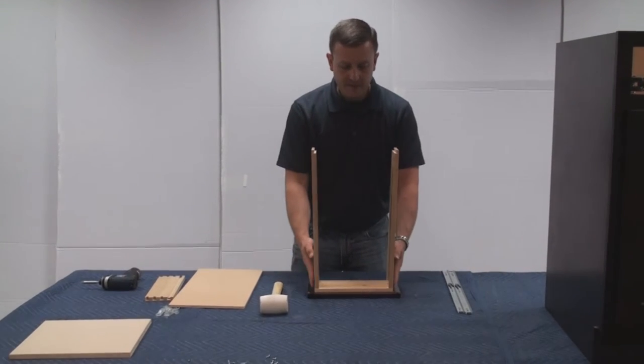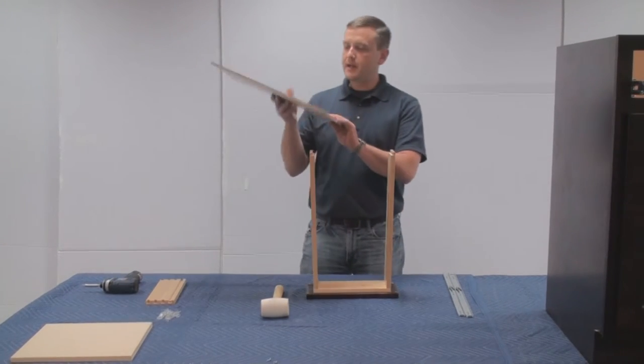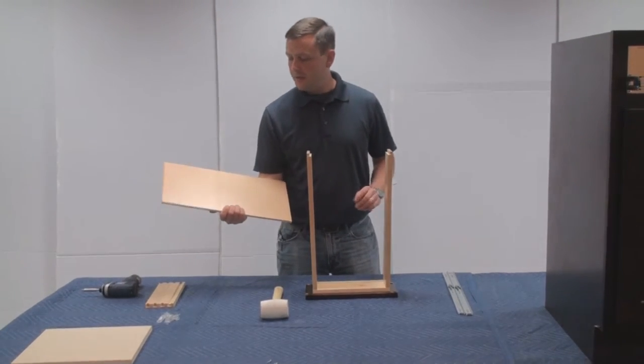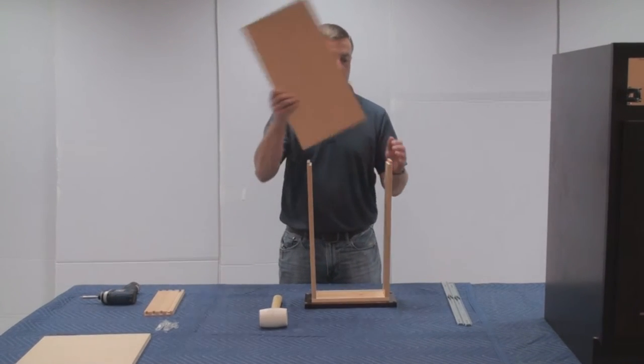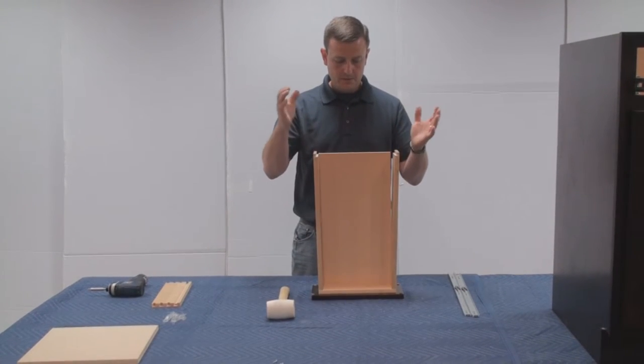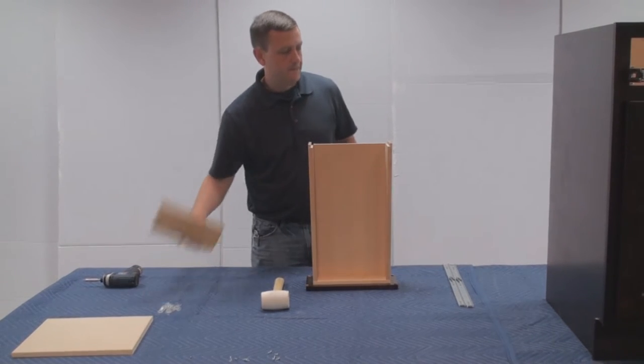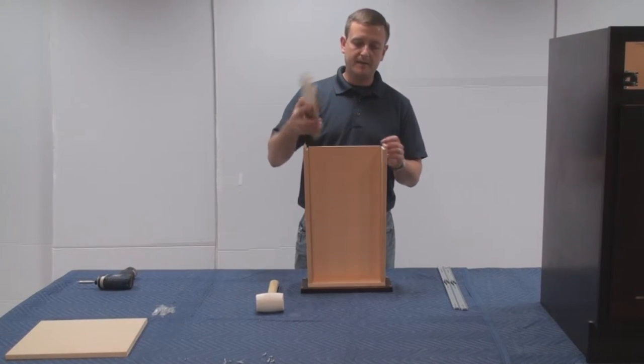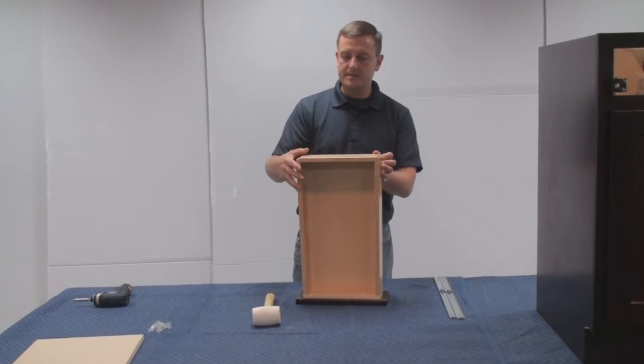Tap those dovetails together, it should go nice and clean and flush. So we have the dovetails set in for the sides, don't worry about the alignment right now. Go ahead and slide our bottom of our drawer in. Make sure that one side is unfinished, one side is finished. The finished side always goes towards the inside of the drawer. So let that fit in nice and tight and securely.